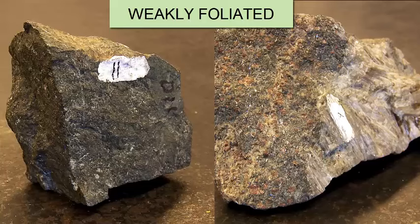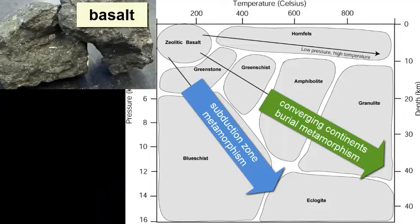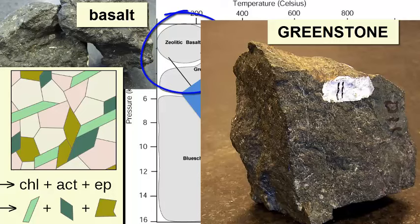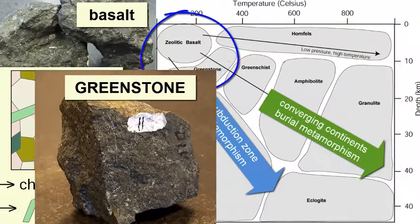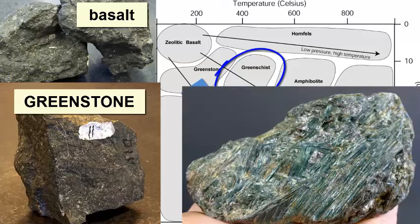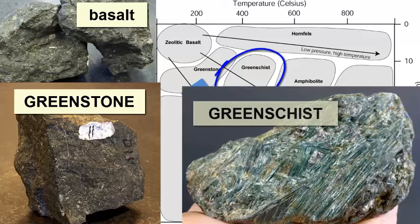These other two rocks represent the metamorphism of basalt. When basalt is subjected to low-grade metamorphism in a burial setting, converging continents, or subduction zone, small crystals of chlorite, epidote, and or actinolite begin to form. This produces a fine-grained, dense green rock called greenstone, which usually still retains much of the shape and texture of the original basalt. If this rock undergoes increasing pressure and temperature in a converging continents or deep burial setting, the crystals will grow larger and eventually actinolite crystals will dominate the rock. We then call it a greenschist.